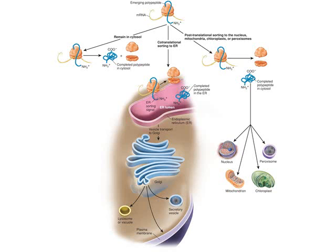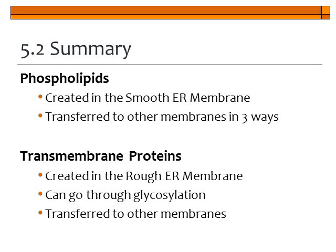Mostly, ribosomes and the rough ER are responsible for protein synthesis. In summary, this section of Chapter 5 covered how and where the different components of biological membranes are created. Phospholipids are created in the smooth endoplasmic reticulum and can be transferred to other membranes in three ways. Transmembrane proteins are created in the rough endoplasmic reticulum, can undergo glycosylation to have carbohydrates attached, and are then transferred to other membranes via vesicles.